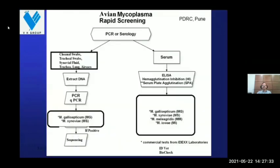At PDRC, rapid screening is done by PCR or serology. For PCR, choanal swabs, tracheal swabs, synovial fluid, trachea, lung, and air sacs are used as samples; after DNA extraction, PCR or qPCR is performed, and by sequencing, various strains can be identified. For serology, ELISA, hemagglutination inhibition test, and serum plate agglutination (SPA) test are used. Various kits are available for SPA, such as from IDEXX Laboratories, ID-VET, and BioCheck.